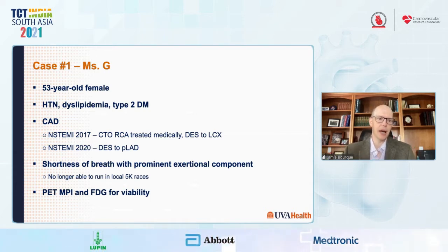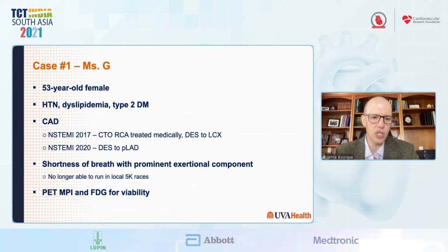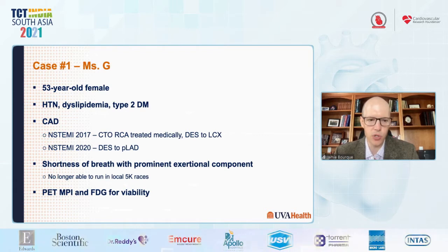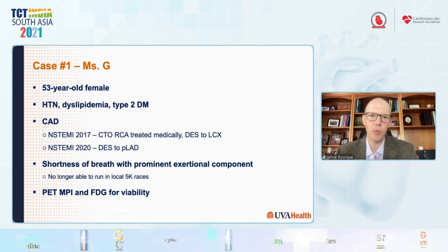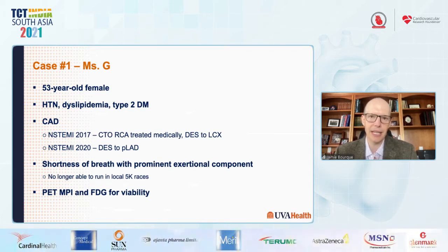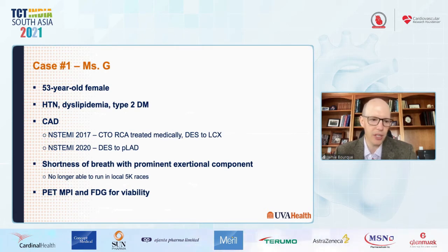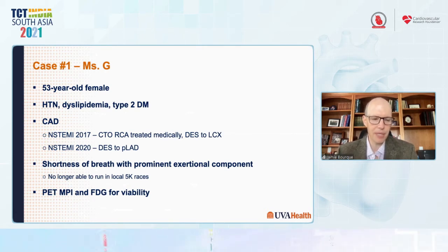However, recently, prior to presentation, she had developed shortness of breath with a prominent exertional component, and she was no longer able to run in her local 5K races. The team was unsure as to whether she was having predominantly ischemia or whether there was a heart failure picture, and they sent the patient for PET-MPI and FDG for viability.